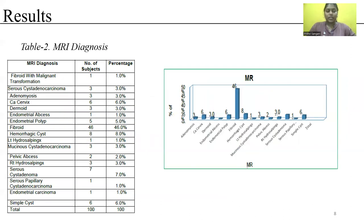Based on MRI diagnosis: fibroid 46%; fibroid with malignant transformation 1%; serous cystadenocarcinoma 3%; adenomyosis 3%; carcinoma cervix 6%; dermoid 3%; endometrial abscess 1%; endometrial polyp 5%; hemorrhagic cyst 8%; hydrosalpinx 1%; mucinous cystadenocarcinoma 3%; pelvic abscess 2%; right hydrosalpinx 3%; serous cystadenoma 7%; serous papillary cystadenocarcinoma 1%; endometrial carcinoma 1%; simple cyst 6%. The maximum cases were fibroids.